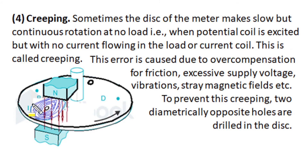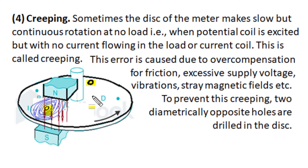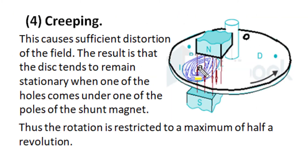Creeping is also a concern in disk-type energy meters. Sometimes the disk makes a slow but continuous rotation at no load — the shunt magnet is excited by voltage but there is no load current, so the series magnet is not excited, yet the disk starts slow continuous rotation. This is called creeping. The cause of creeping is over-compensation for friction, excessive supply voltage, or external stray magnetic field effects. To prevent creeping, two diametrically opposite holes are drilled in the disk. Even when light load adjustment has over-compensated friction, the disk won't rotate more than half a turn.